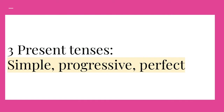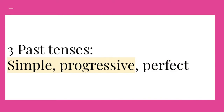There are three present tenses: simple present, present progressive, and present perfect. There are also three past tenses: simple past, past progressive, and past perfect. Progressive, by the way, is also called continuous.